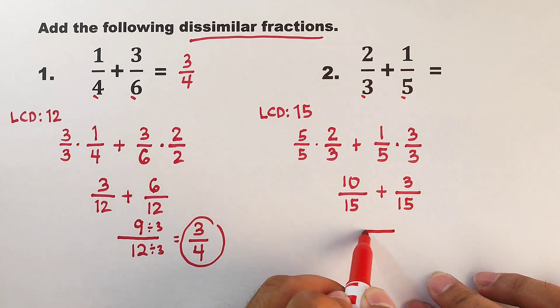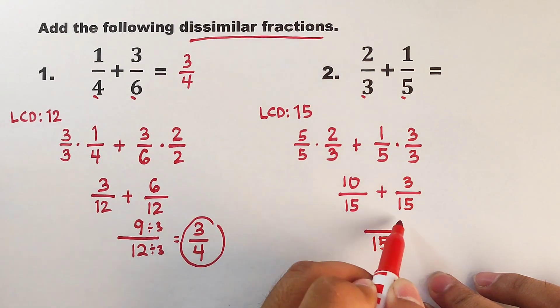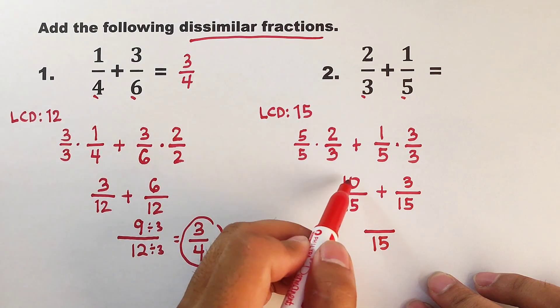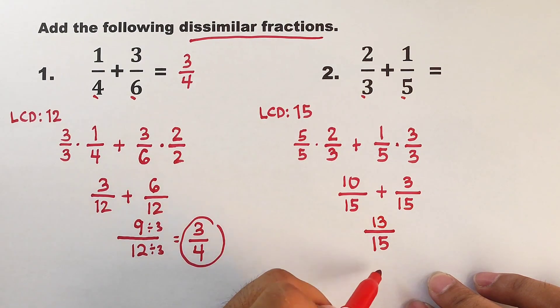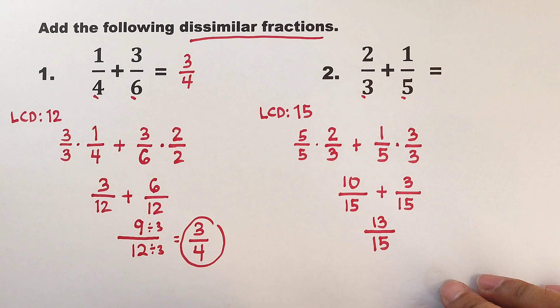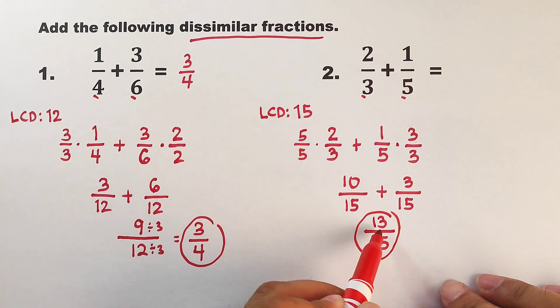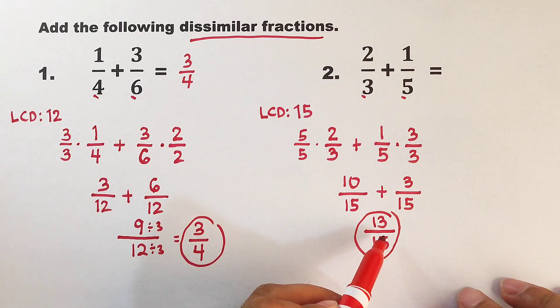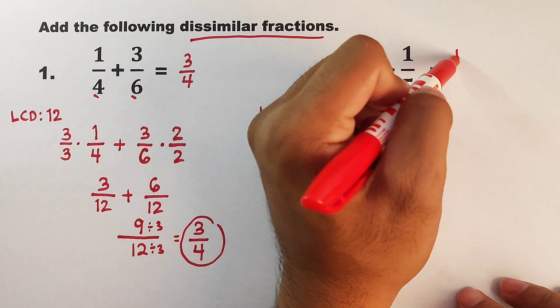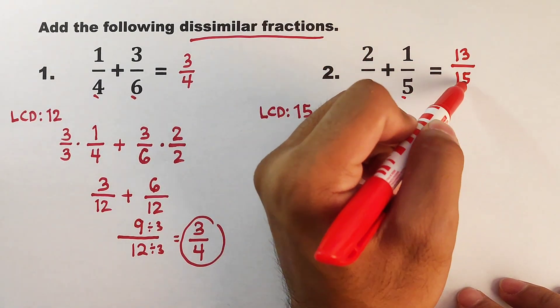In this case, we could copy the denominator. Since they are the same, then 10 plus 3, that would be 13. And as you can see, we cannot simplify this anymore because 13 is a prime number. So the final answer must be 13 over 15.